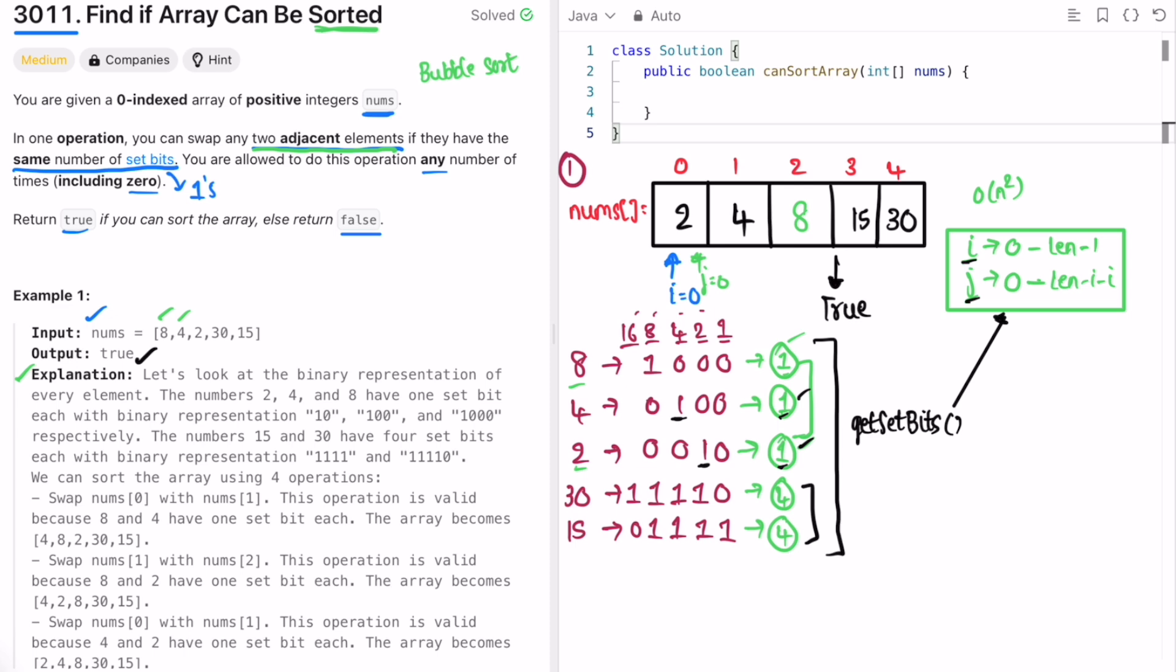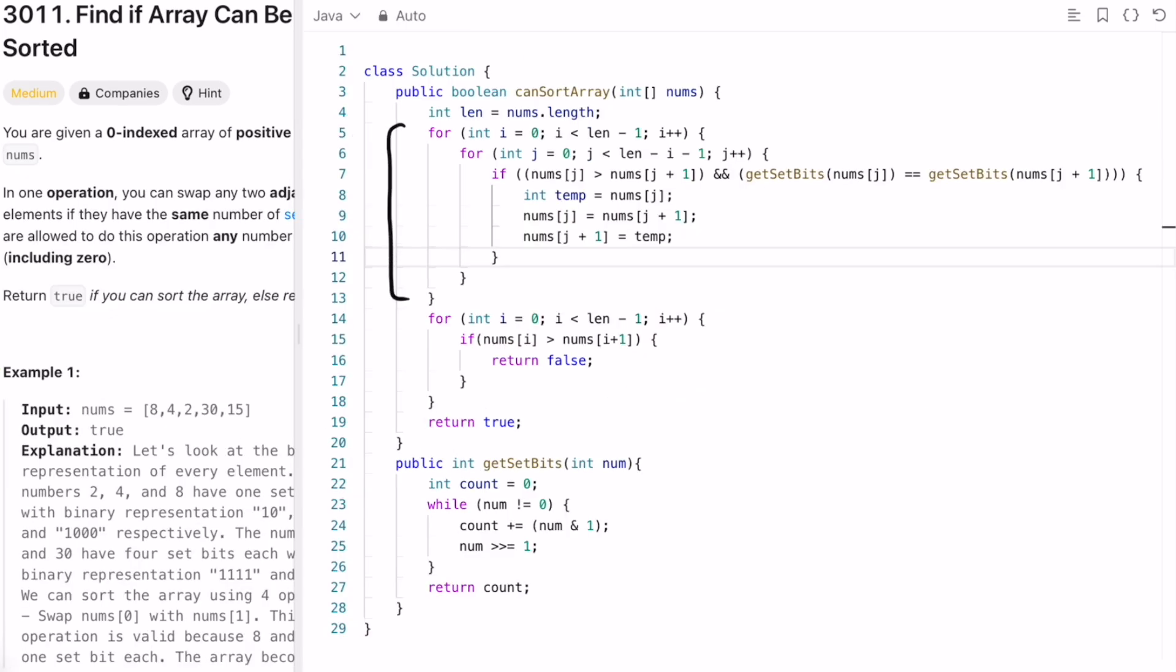So here we are implementing bubble sort. We are taking two outer loop and inner loop i and j. Checking if the element pointing at j is greater than element pointing at j plus 1, and we are checking if the elements pointing at j and elements pointing at j plus 1 are having the same set bits.